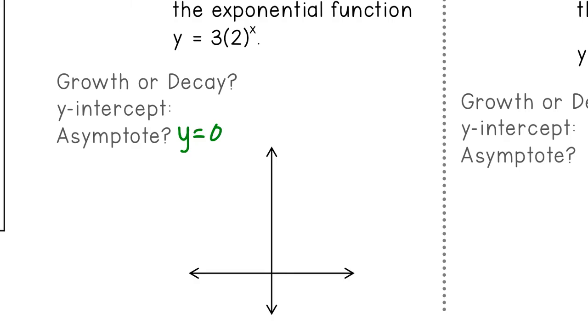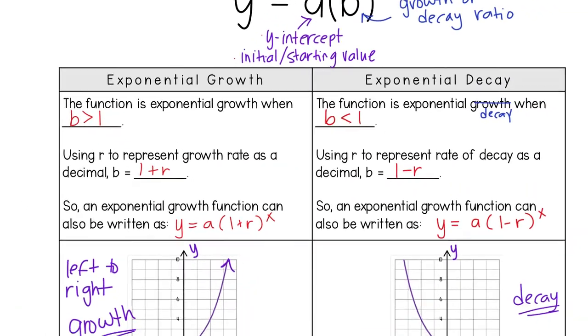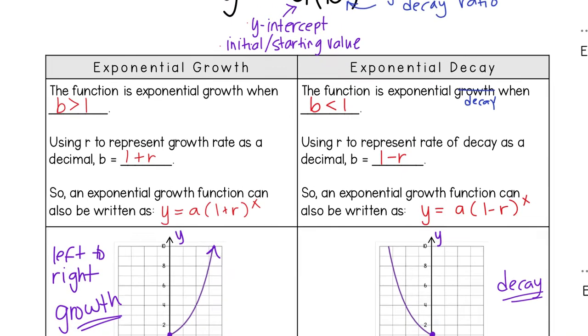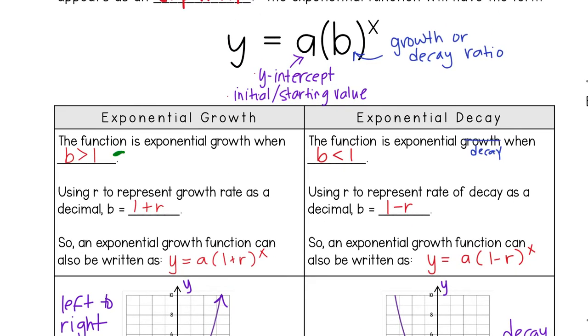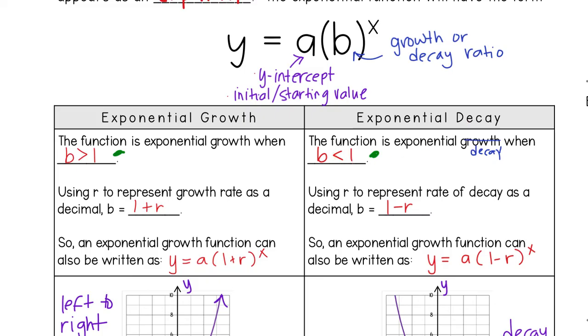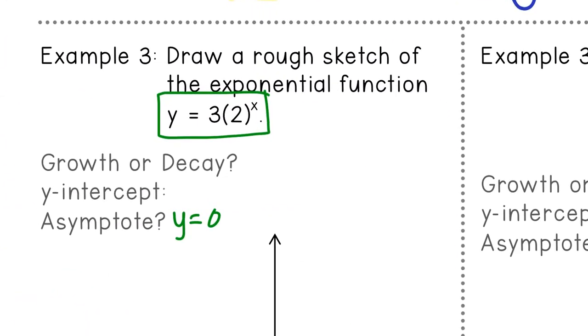Now growth or decay, we don't have a graph to look at. All we have is the function that they told us. So I'm going to go back to my notes for a second. How do I know the difference between exponential growth and exponential decay? Well, if you look here, the one that tells me what makes it different is b. And b is the one that's inside the parentheses. So depending on what's inside the parentheses, if it's greater than one, it's growth. If it's less than one, it's decay. So let's look at the problem again. In our b place, we have a two. Now two is greater than one, which makes it growth.